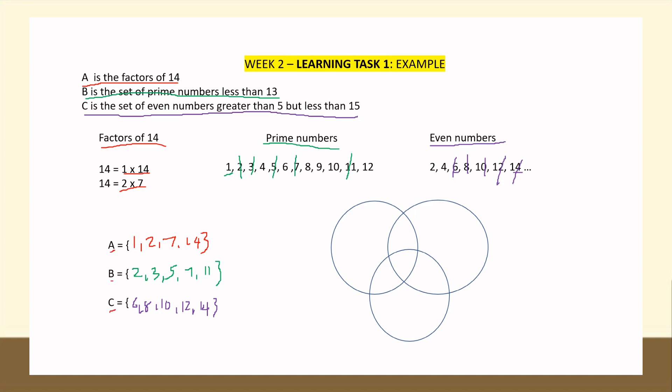Since we have 3 sets A, B, and C, we will use 3 circles to represent the given sets. The first circle is named Set A, this is Set B, and this is Set C. Let us start with the middle part.